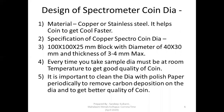Design of the spectrometer coin die is very important. The material must be copper or stainless steel — most probably copper is the best material because it helps the sample cool faster. Some people use MS dies but with MS the material will not cool fast enough and you will not get a good sample. The specification of the coin die should be 100mm × 100mm × 25mm block with a diameter of 40 × 30mm, and thickness should be 3 to 4mm maximum.